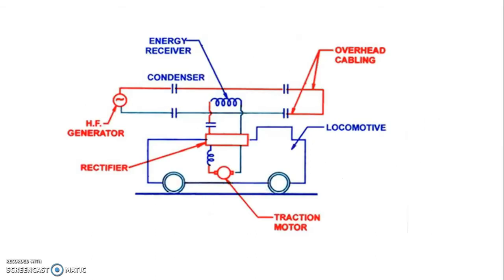In the general arrangement for the single phase high frequency AC system, a high frequency generator feeds power to two overhead cables. The locomotive has an energy receiver whose winding receives power by electromagnetic induction from the overhead cables.